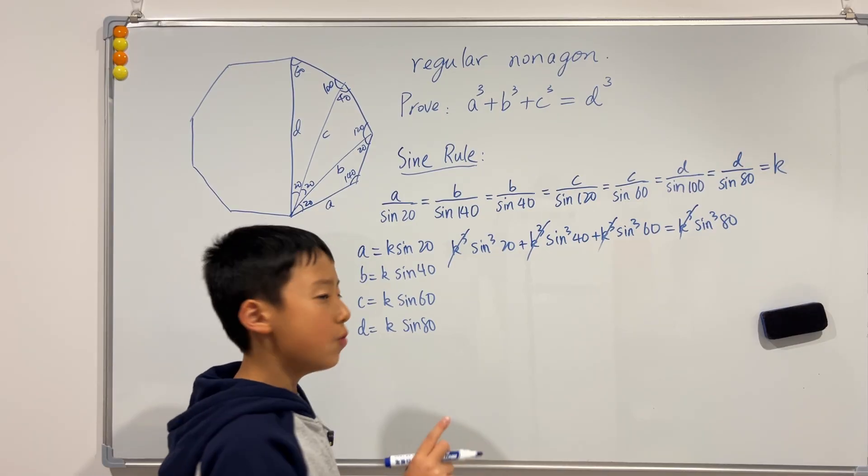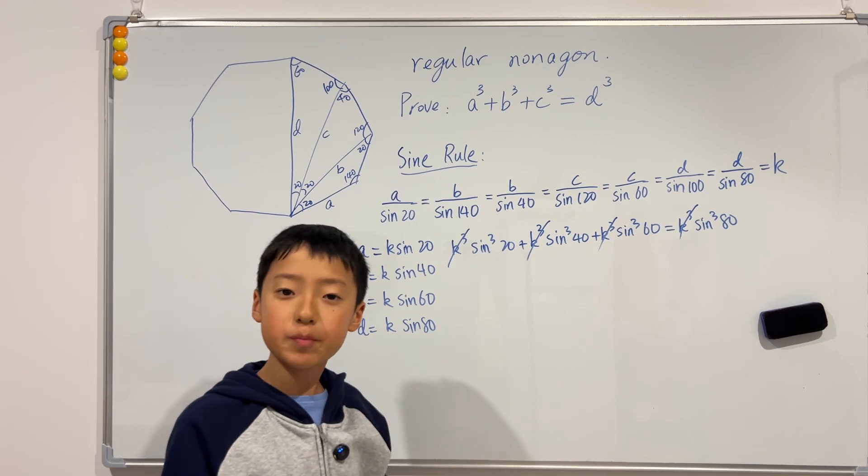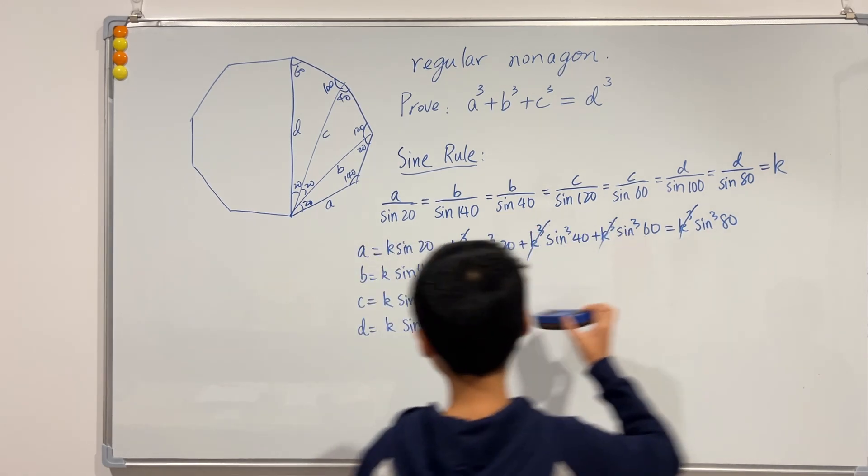Well, where have you seen sine cubed of something? Well, of course, in the triple angle formula. So I'll rub this out.